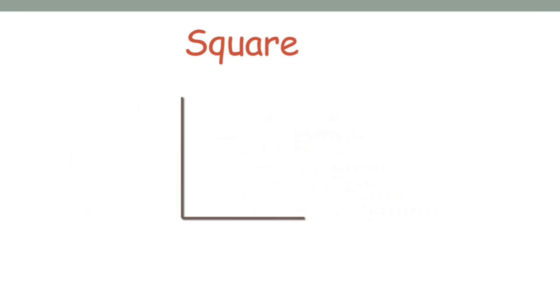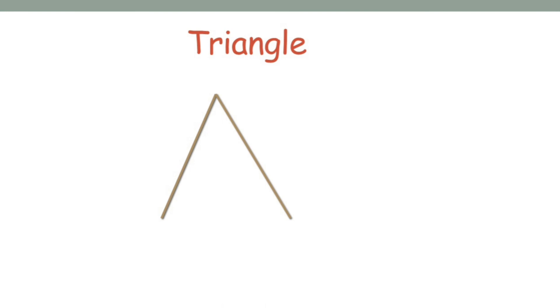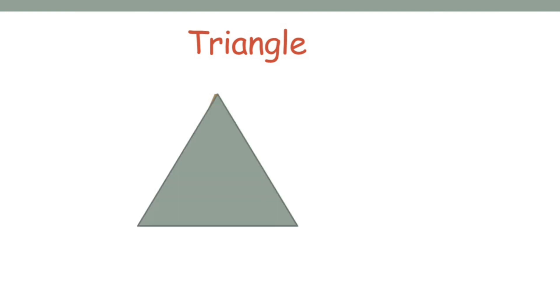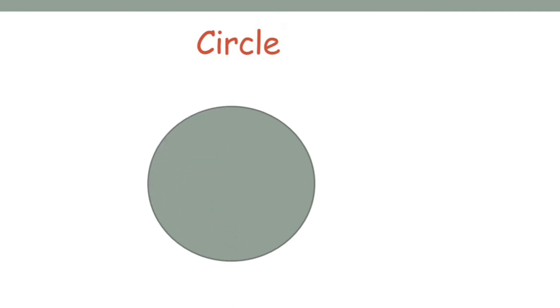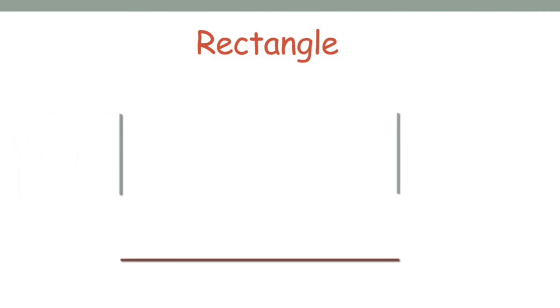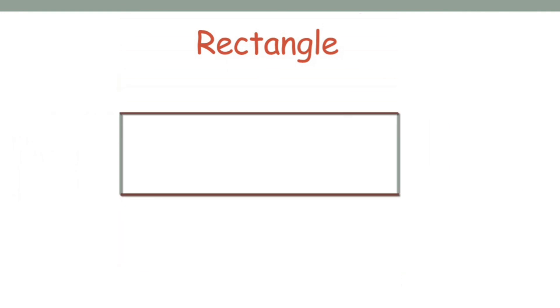A square has four equal sides — all of the sides are the same length. A triangle has three sides. A circle is completely round. A rectangle has four sides: two short sides and two long sides.